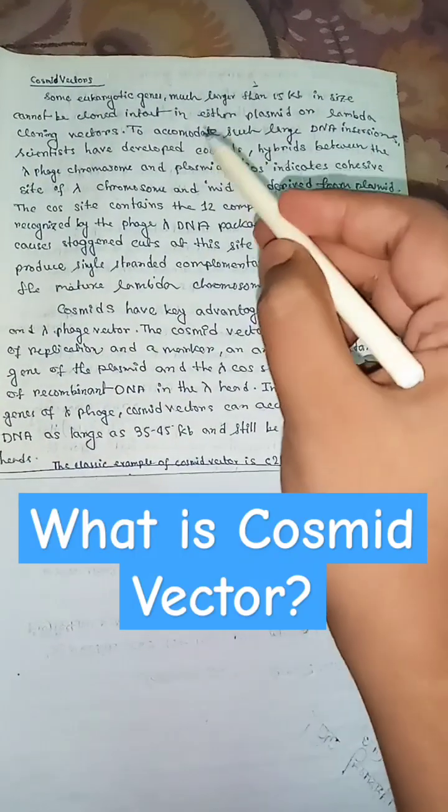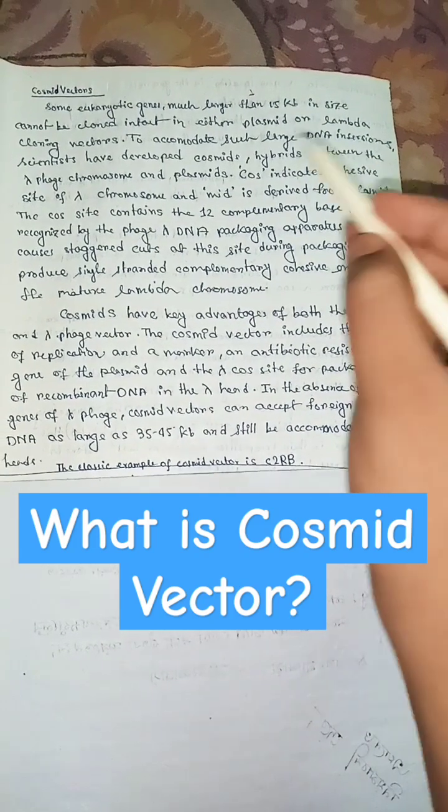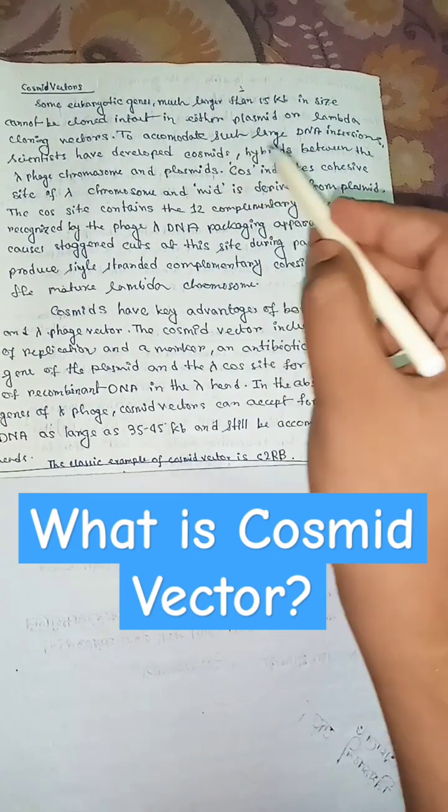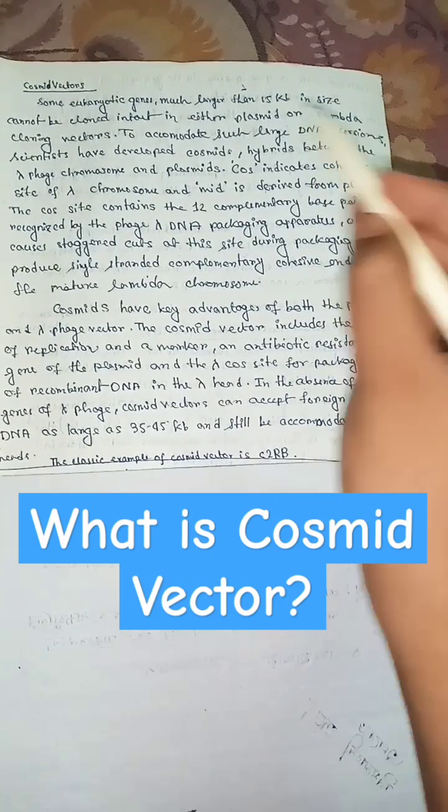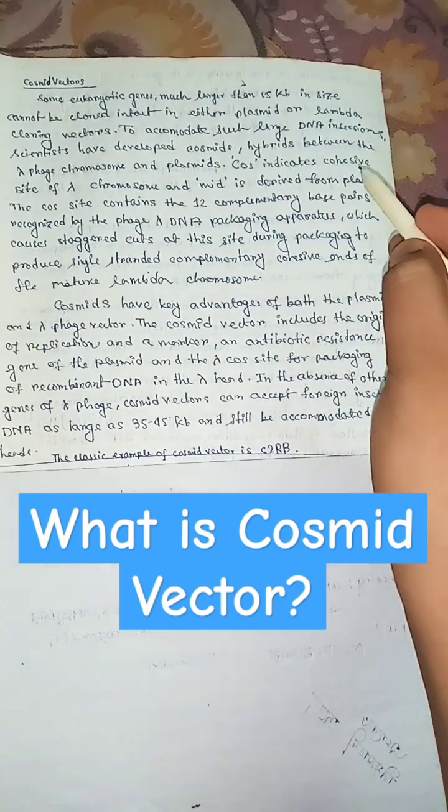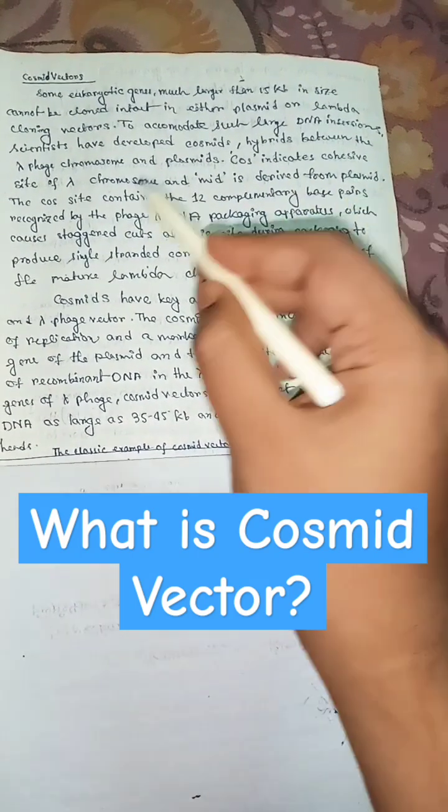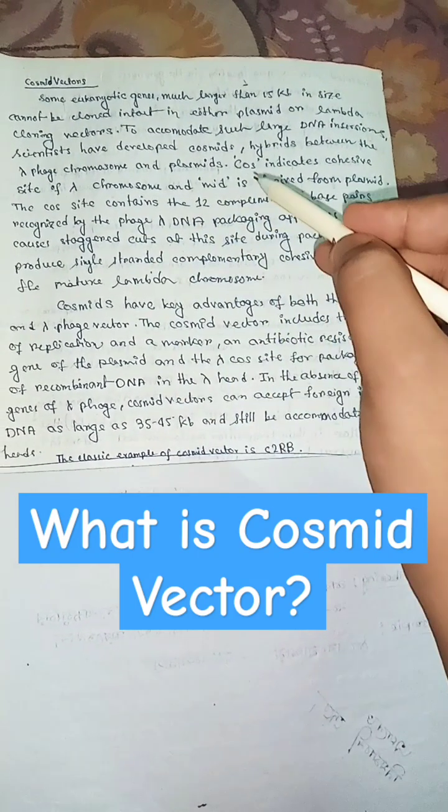Cosmid vectors accommodate some eukaryotic genes much larger than 15 kilobase in size, which cannot be cloned intact in either plasmid or lambda cloning vectors. To accommodate such large DNA insertions, scientists have developed cosmids, hybrids between the lambda phage chromosome and plasmids.